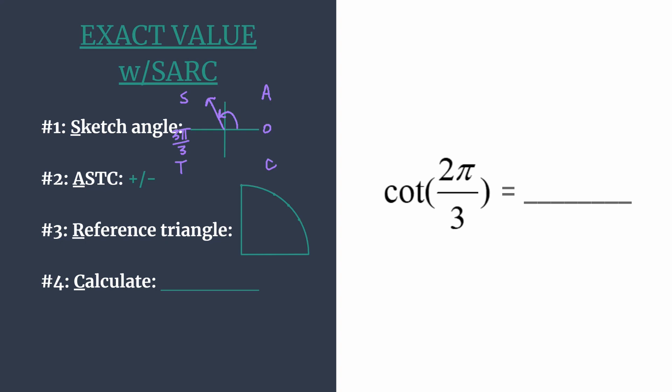So quadrant 1, all six are positive. Quadrant 2, only sine and its reciprocal cosecant are positive. Well, since we're trying to find the cotangent of our angle in the second quadrant, we know our answer should be negative. Okay, so let's go ahead and mark negative for our final answer.